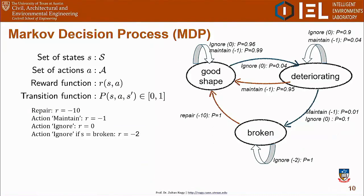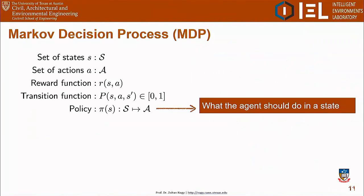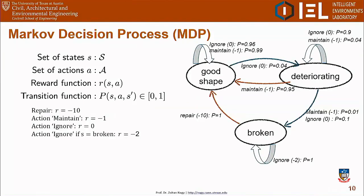In reinforcement learning, we have the environment, and the environment always needs to follow a Markov decision process, or MDP, which means that the transition probability to go from one state to another when you take an action must depend only on the current state and the action you are taking — not on previous states or actions. For a given state, taking an action, we obtain a reward, and there's a probability of transitioning to a different state. Reinforcement learning is trying to learn a policy that goes through this Markov decision process maximizing the number of rewards obtained.